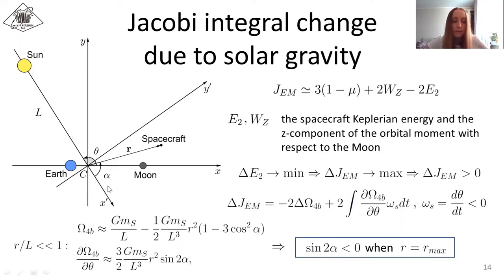It means that the apogee of WSB trajectory should lie in the second or fourth quadrant of the rotating reference frame CX'Y', with X' axis connected to the Sun and the Earth-Moon center of mass. This well-known result now has an analytical explanation.